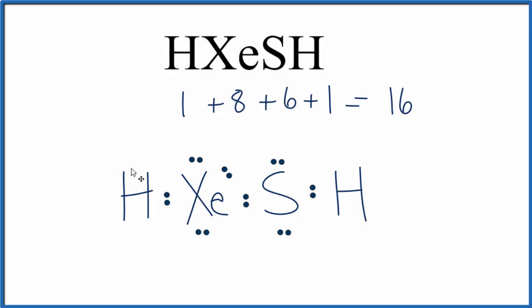And that would complete our Lewis structure for HXeSH. Xenon has an expanded octet, but that's okay. Sulfur has its octet, and the hydrogens, those are fine as well.